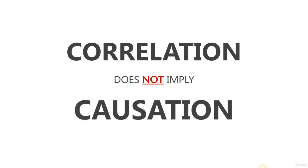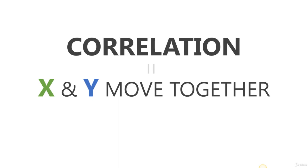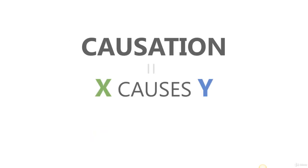I'm sure many of you have heard this before, especially if you work in data or analytics, but let's take two minutes and break this down. Correlation is when two variables x and y move together — they move in the same direction. Causation, on the other hand, is when variable x causes variable y. In other words, there's a clear cause and effect relationship.